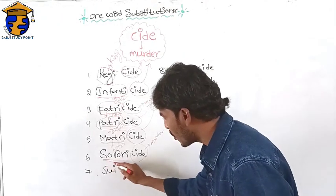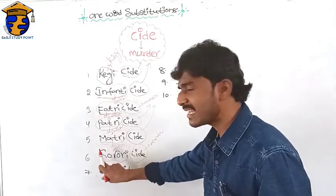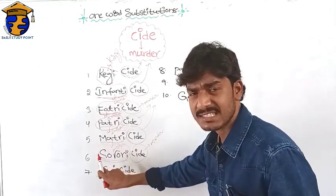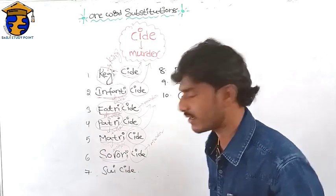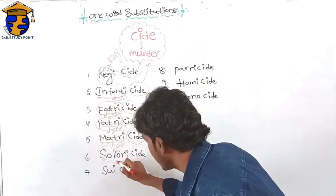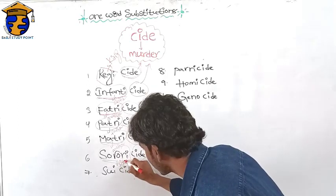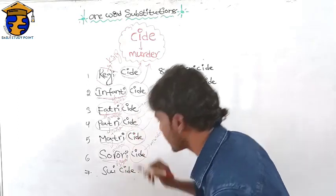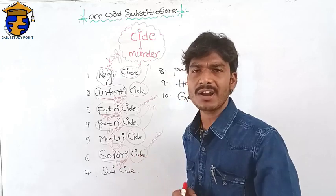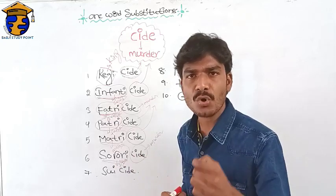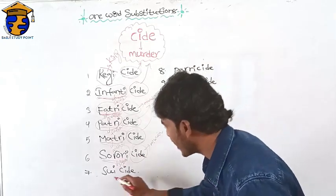What is the meaning of 'sorori'? 'Sorori' stands for sister. The murder of a sister is called sororicide.